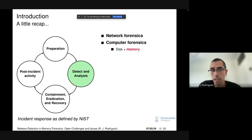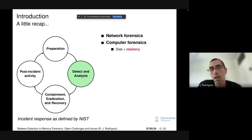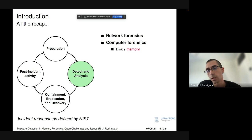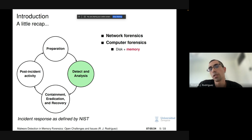We are going to focus on the detect and analysis phase. In particular, one of the things we usually do in this incident response phase is forensics. Forensics can be of different types. When we have a system that has been compromised and need to analyze what happened, we can distinguish two kinds: network forensics — analyzing network communications and packet captures with Wireshark or similar tools — and computer forensics, which involves getting the compromised system and analyzing its device drives, disk, and memory. We are going to focus the talk on the memory part.